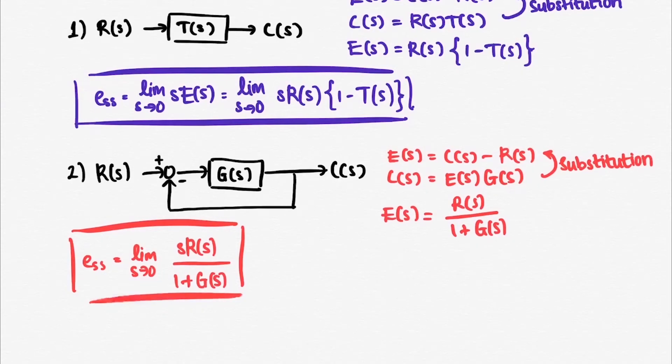Given you already knew the formula to compute steady-state error, you just need to plug in the reference input R of s, whether it is step, ramp, or parabolic, and your known system in G of s or T of s form.